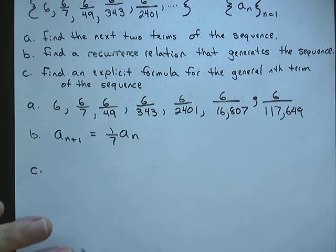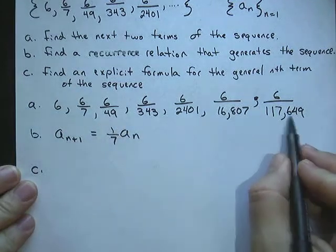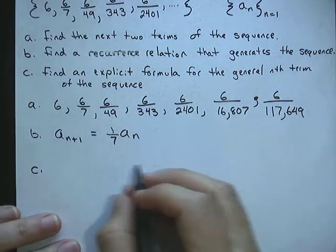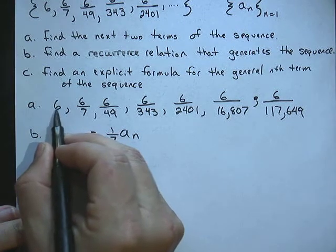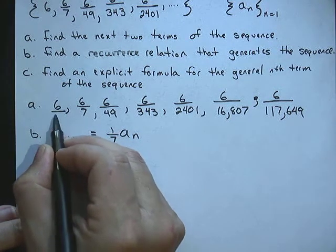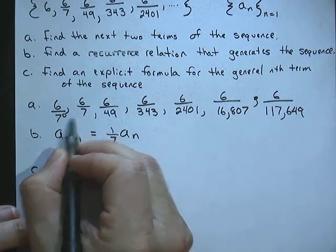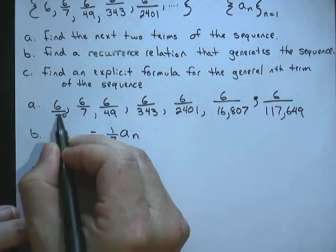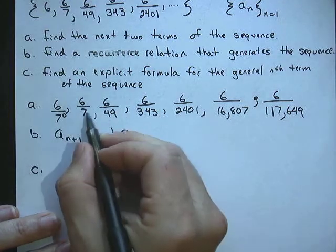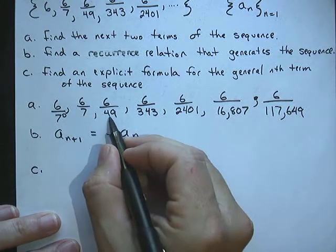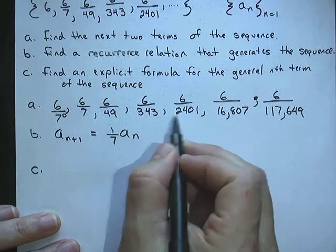So in order to do that, we have to look at this sequence again and write it in a different way. Notice that the denominator of this one, if I rewrote it, could be 7 to the 0 power. That's a 1. So 6 over 7 to 0 power is still 6. This is 7 to the 1 power. This is 7 to the 2 power, 7 to the 3 power, 7 to the 4, and so on.